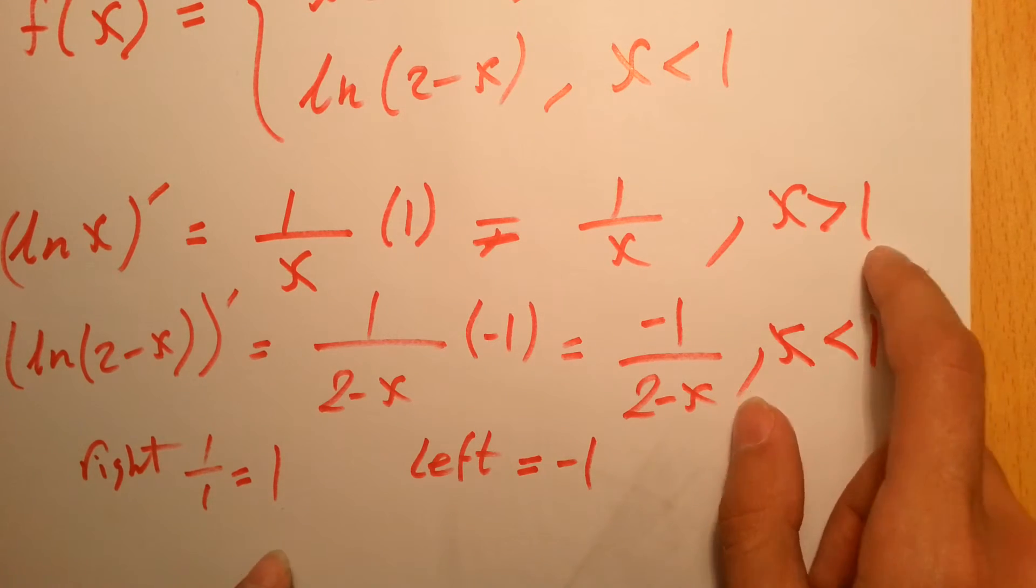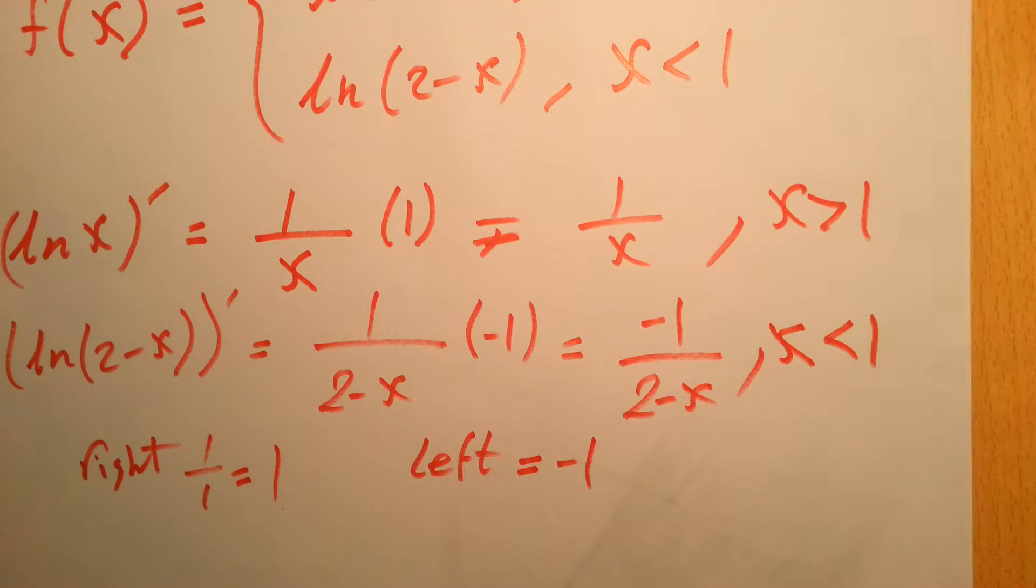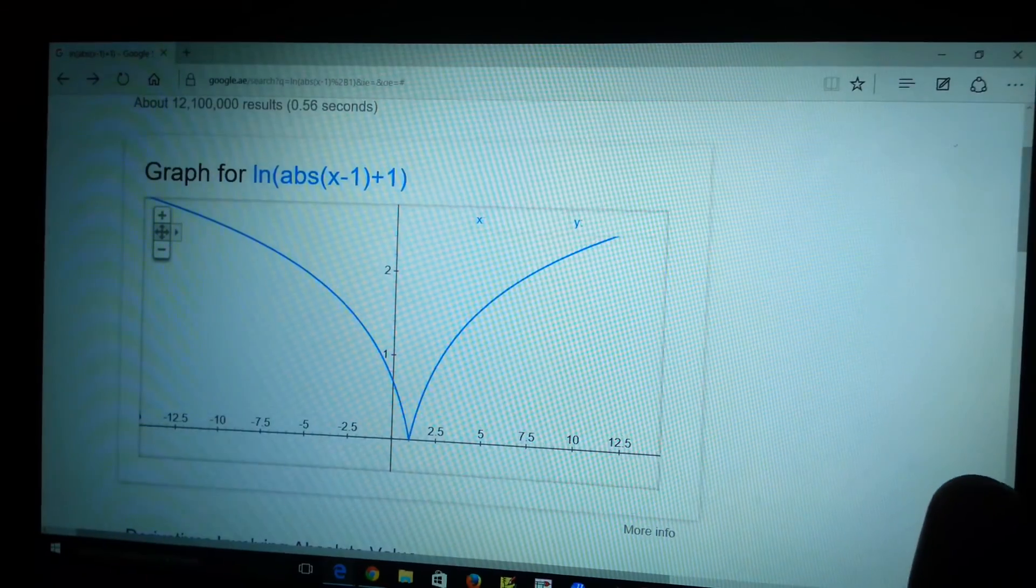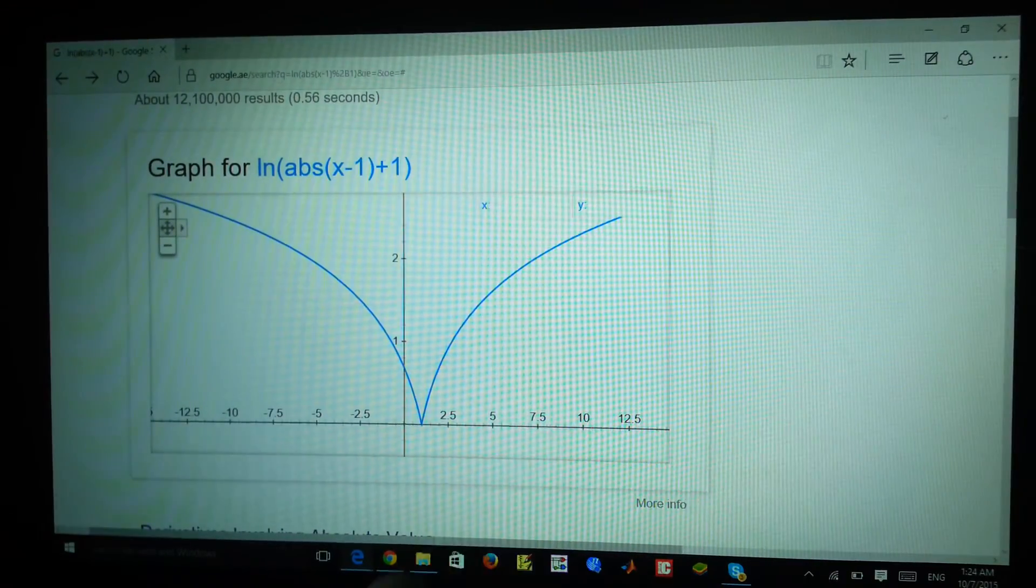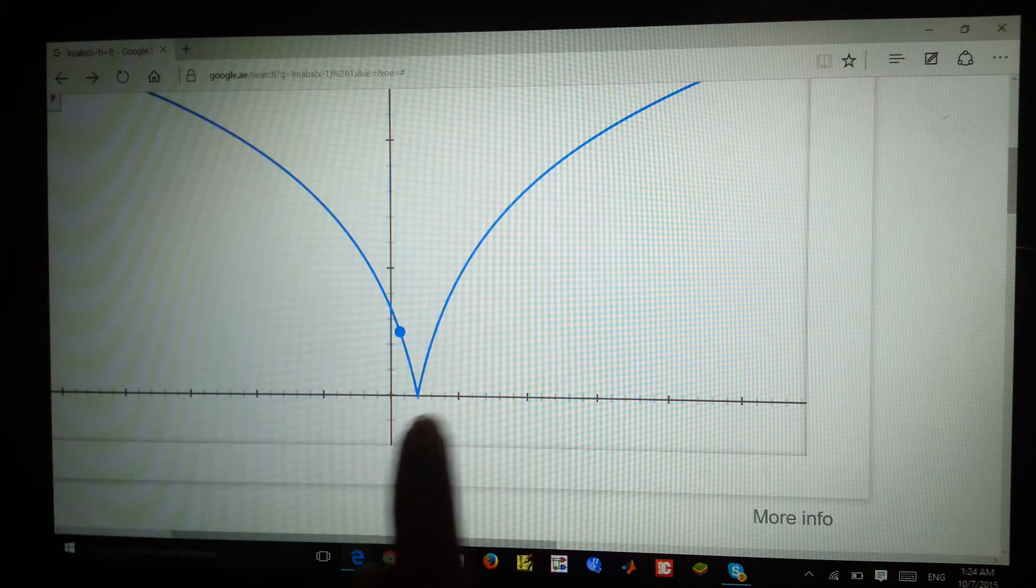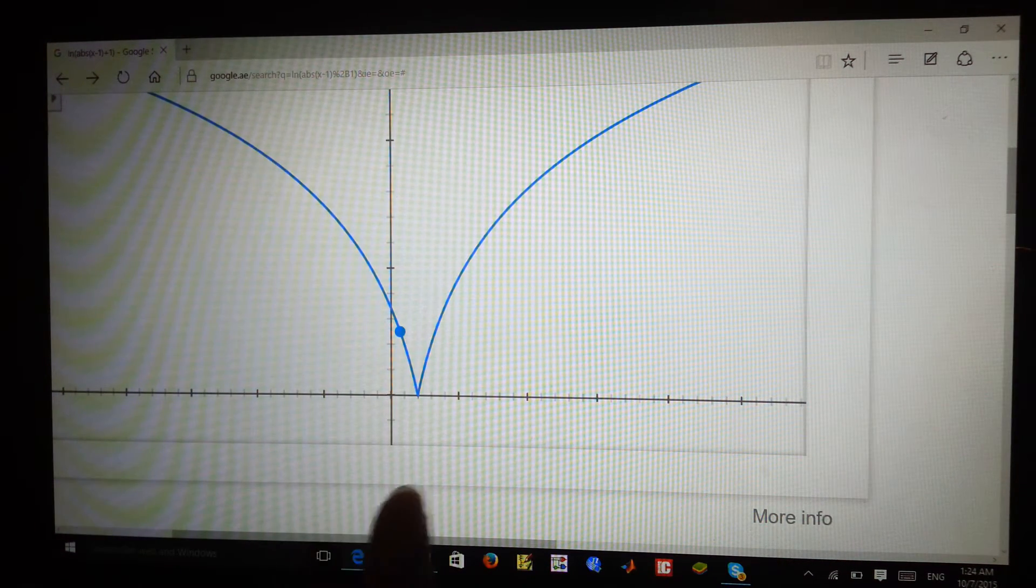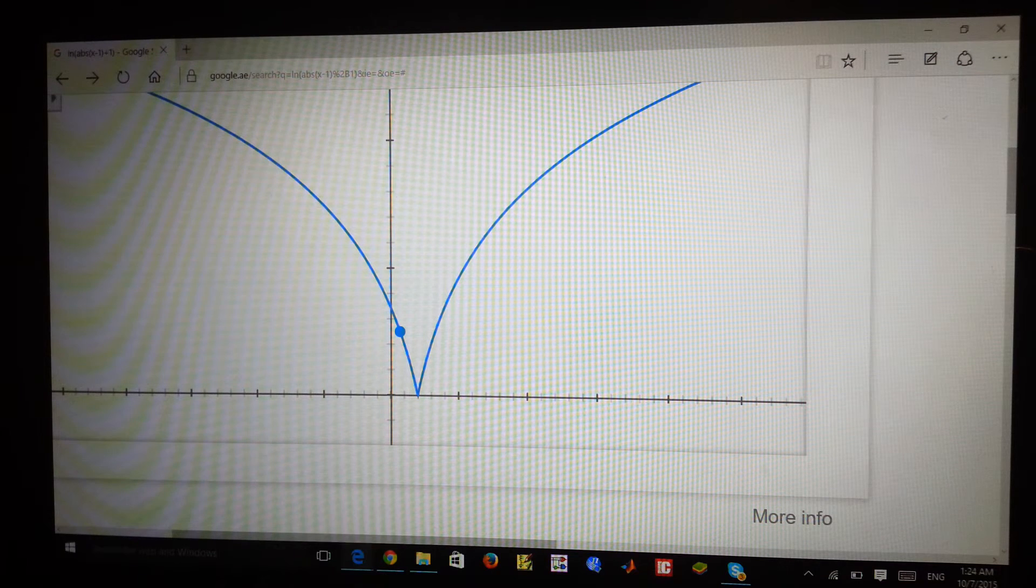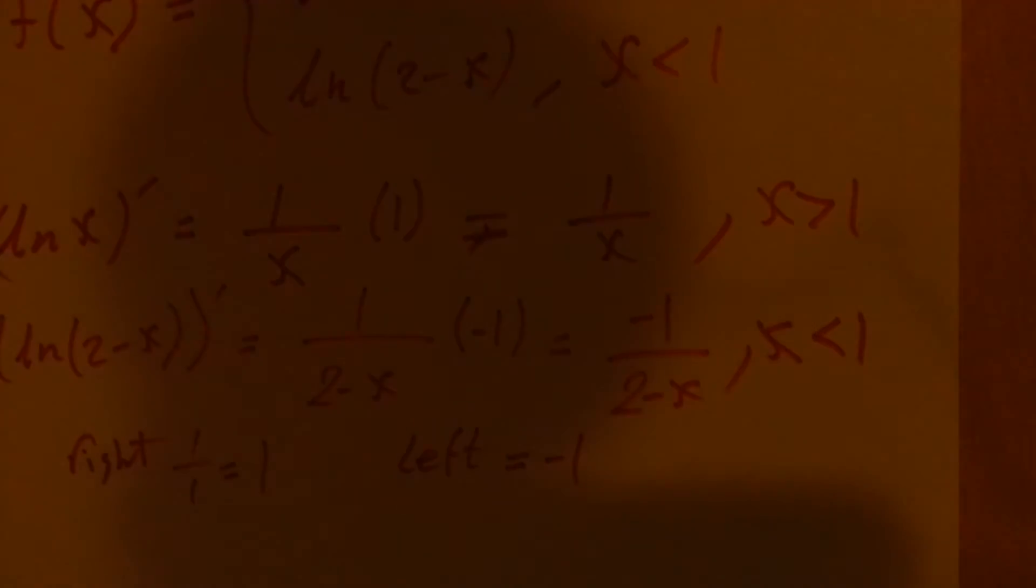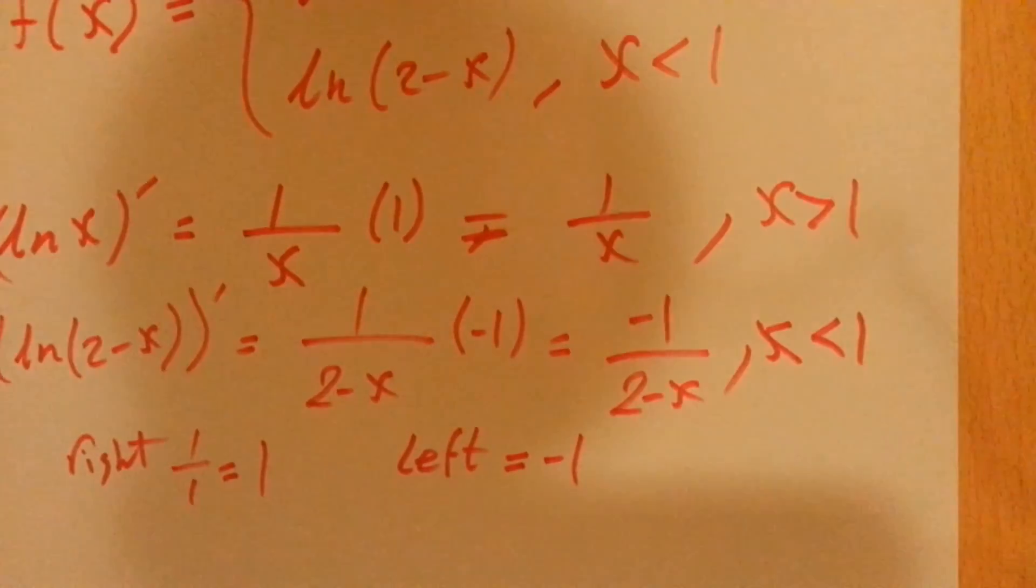This means that this function doesn't have a derivative at x equals 1. If you went to any application that plots the function, this is the graph of the original function. As you can see over here, in this part there is an edge at x equals 1, and that's the reason why we don't have a derivative.